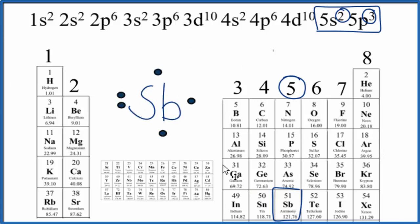So whether you look at the periodic table or you look at the electron configuration, antimony, Sb, has five valence electrons.